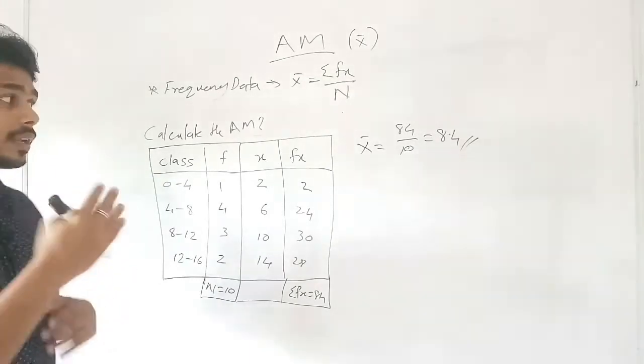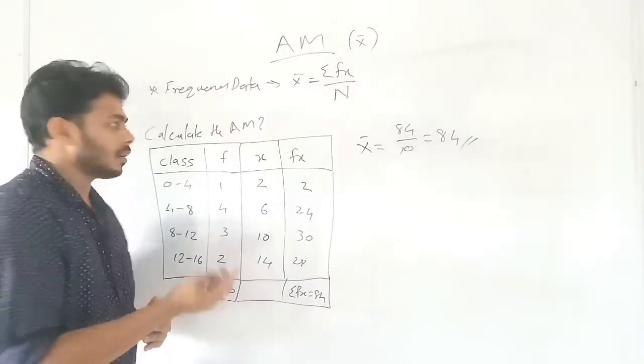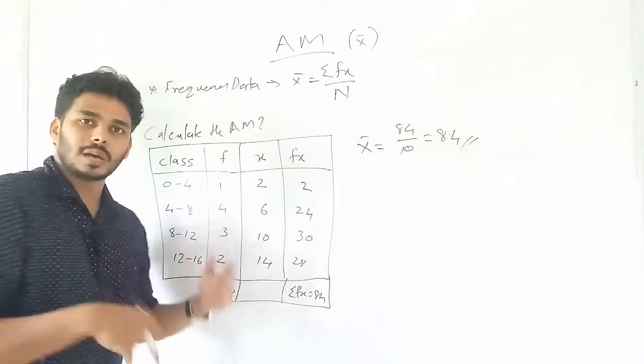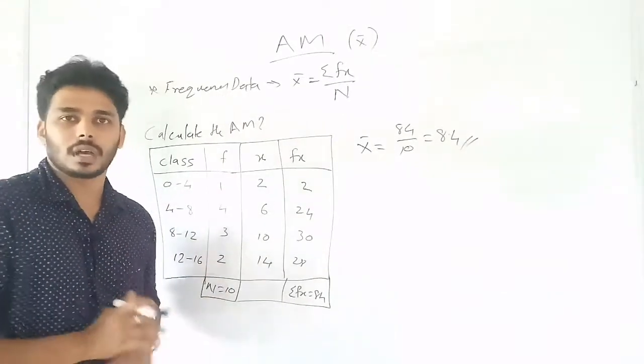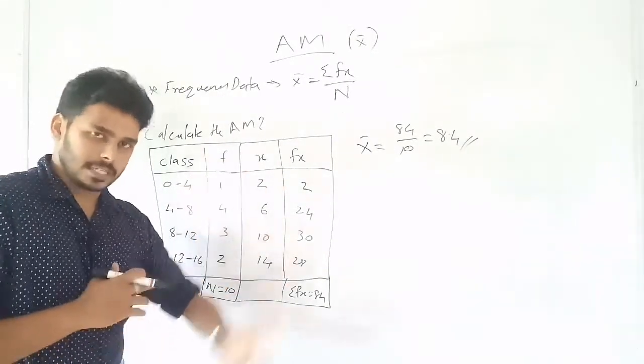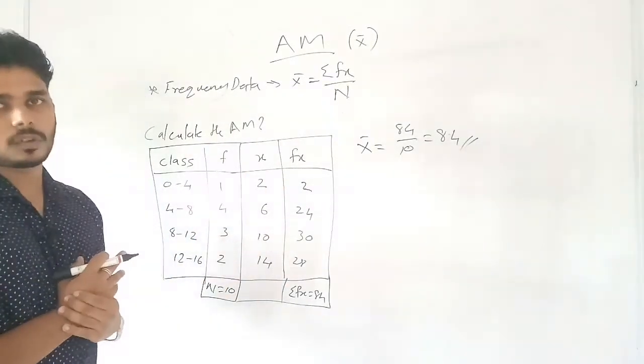This is the calculation for weighted arithmetic mean. In the WAM question, x is the value, f is the frequency in the background, and w is the weight in the background. The procedure follows the same method as frequency data.